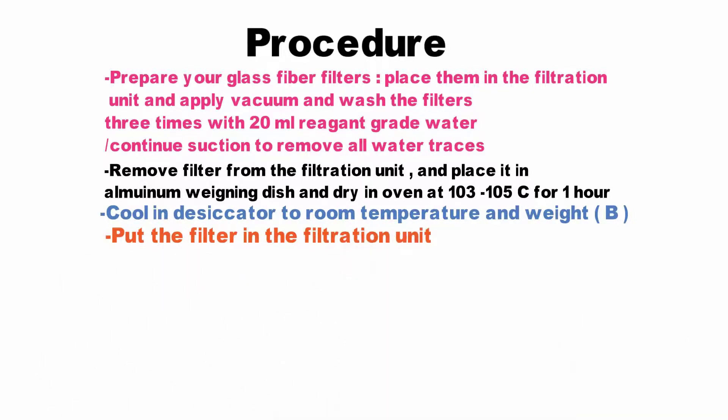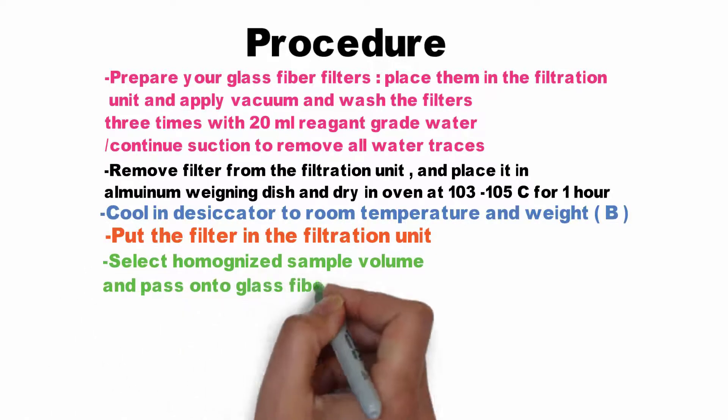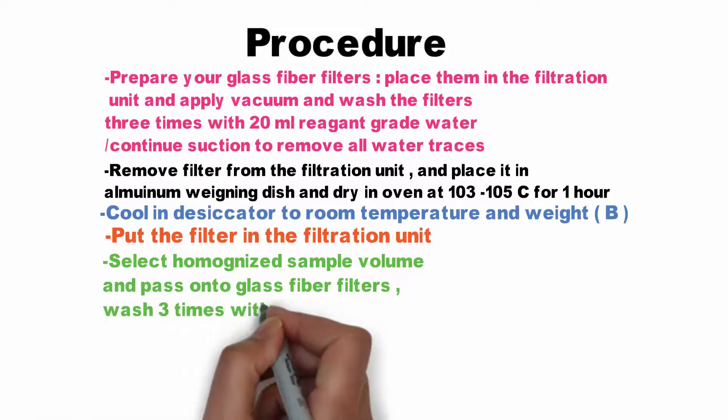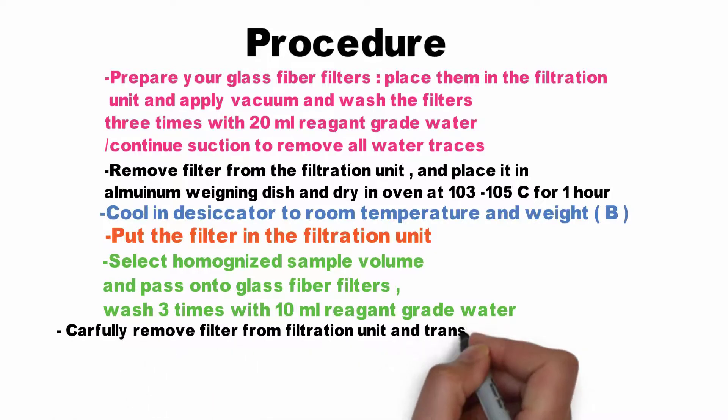Put the filter in the filtration unit and select homogenized sample volume and pass it onto the glass fiber filter. Wash three times with 10 milliliters reagent grade water. Now carefully remove the filter from the filtration unit and transfer it to the aluminum dish.